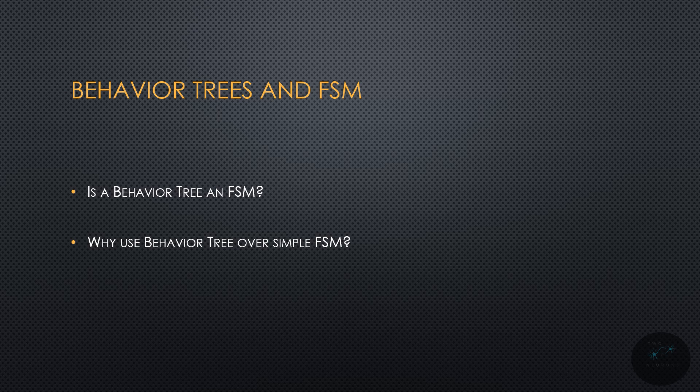A great example of this is looking at some animations for different states an AI can be in. By the way, the entire animation system within Unreal is a finite state machine. You have to label the conditions — why does it transition from this animation to another? So, these finite state machines can get really messy.